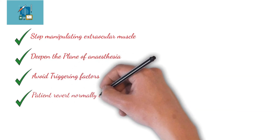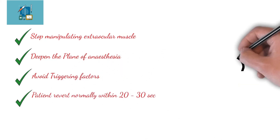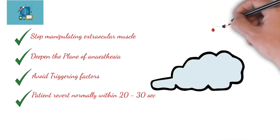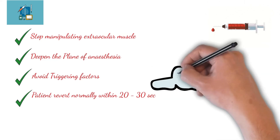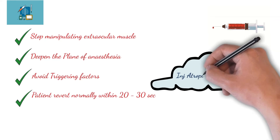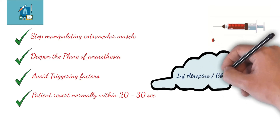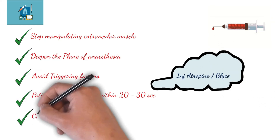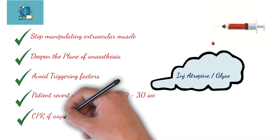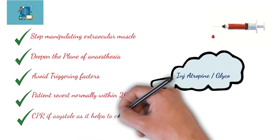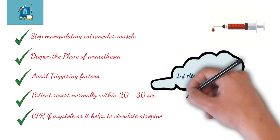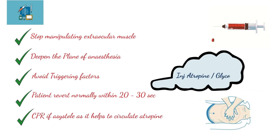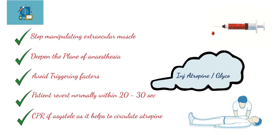All these measures mostly revert the oculocardiac reflex normally within 20 to 30 seconds. But if it does not subside, medications such as injection atropine or glycopyrrolate can always be given. Lastly, CPR can be initiated if asystole develops, as it helps to circulate the atropine injected.